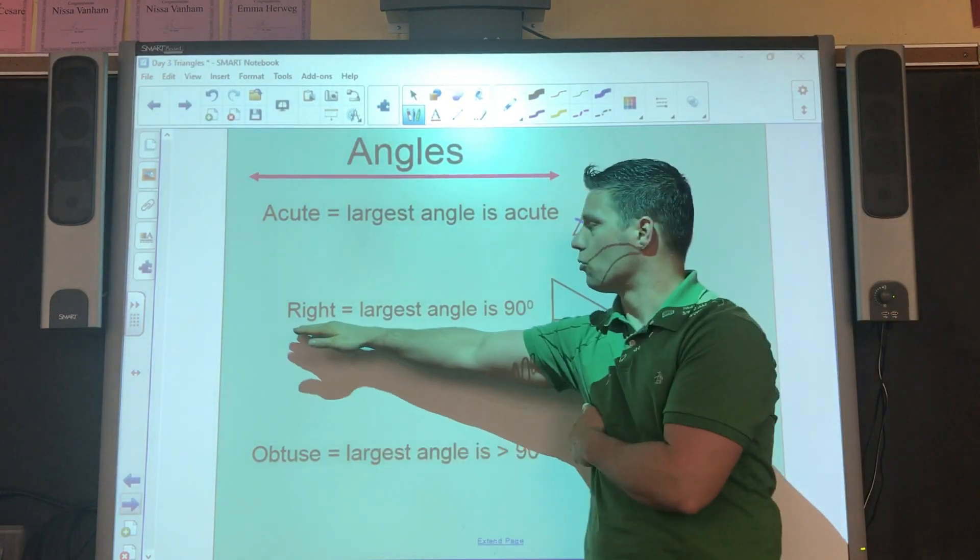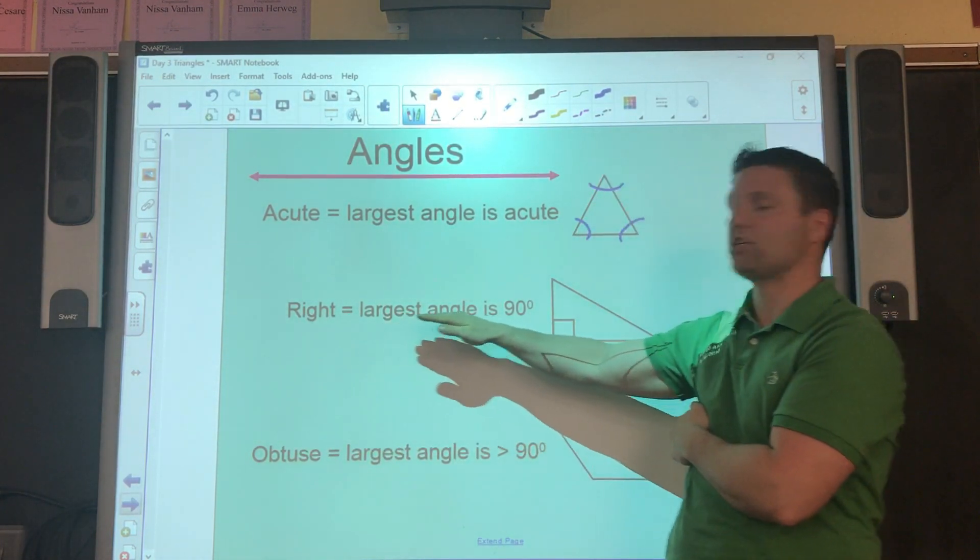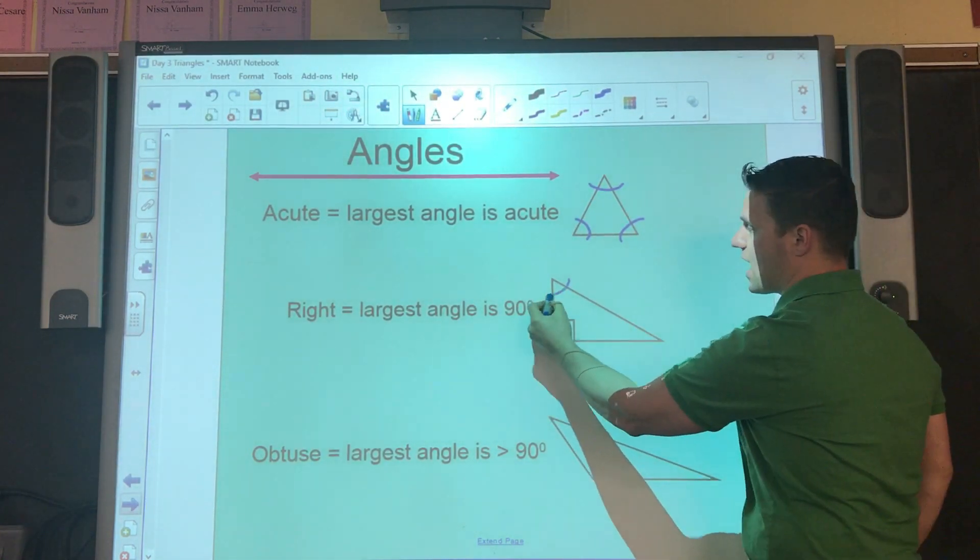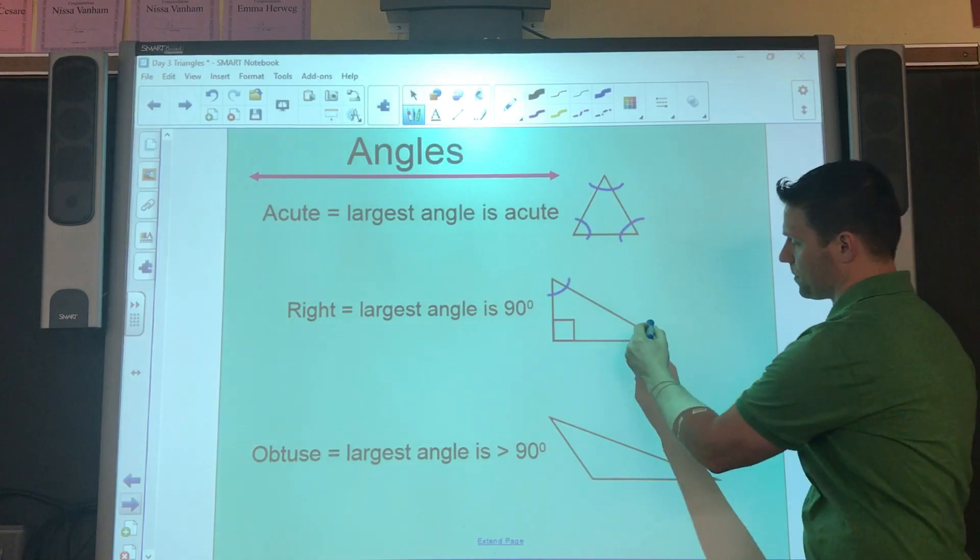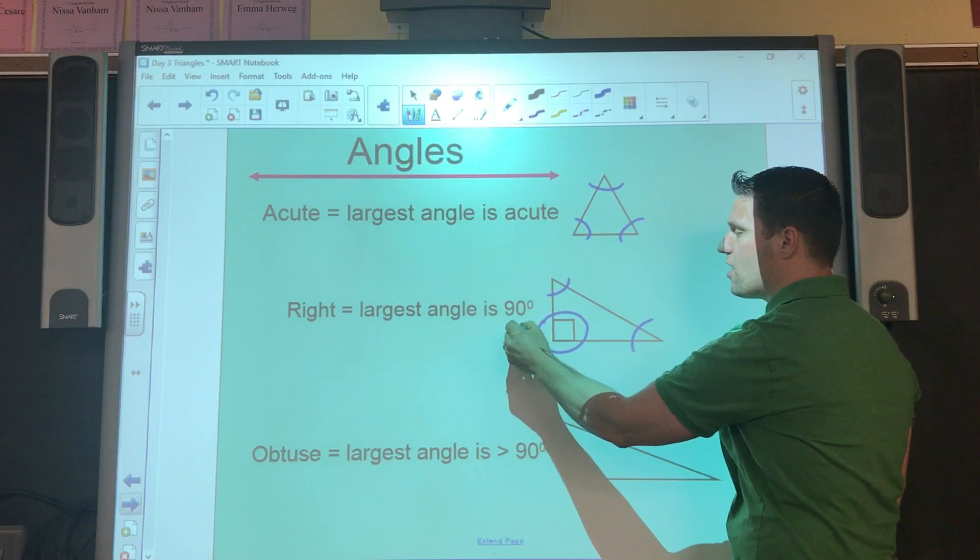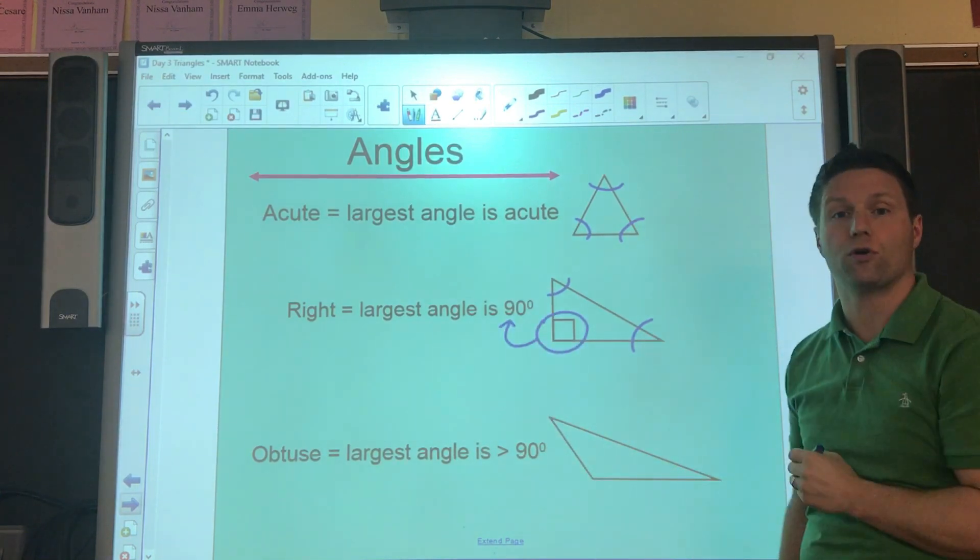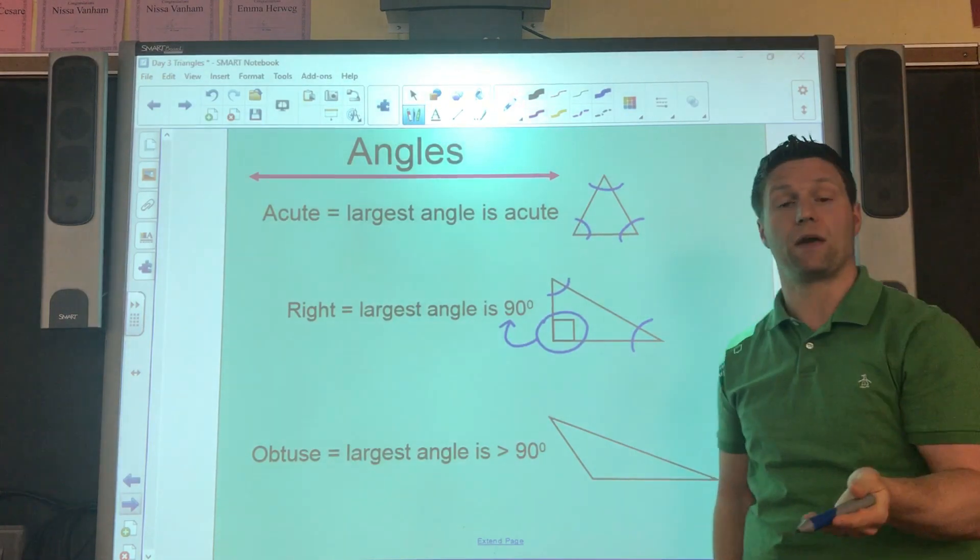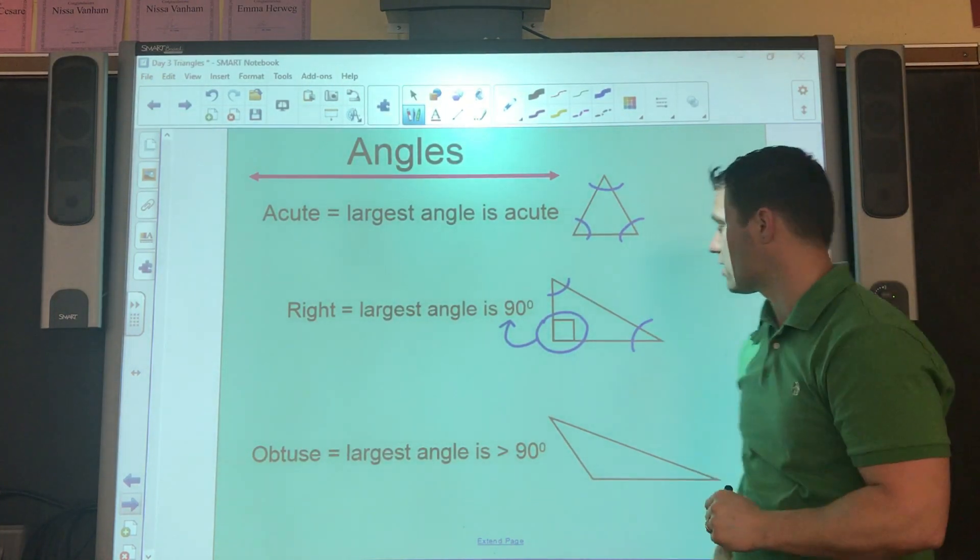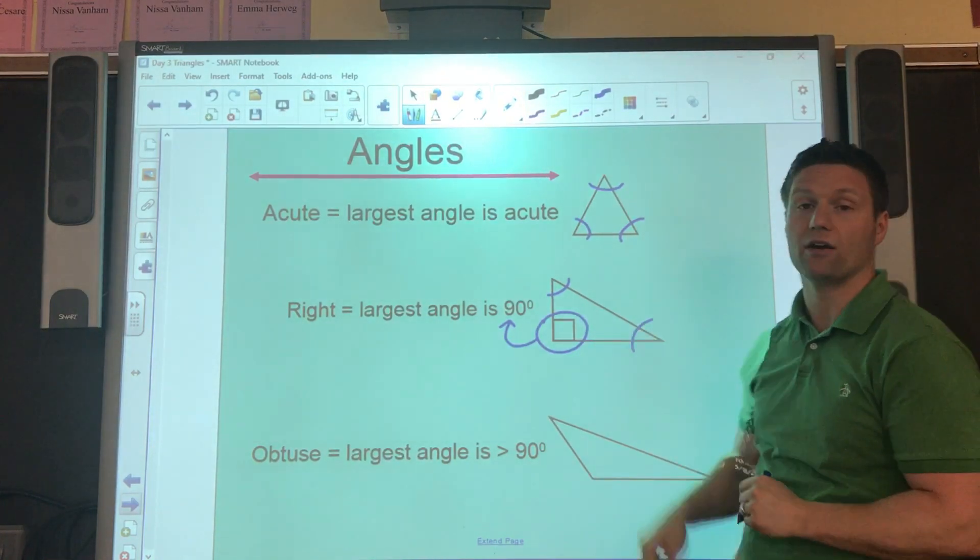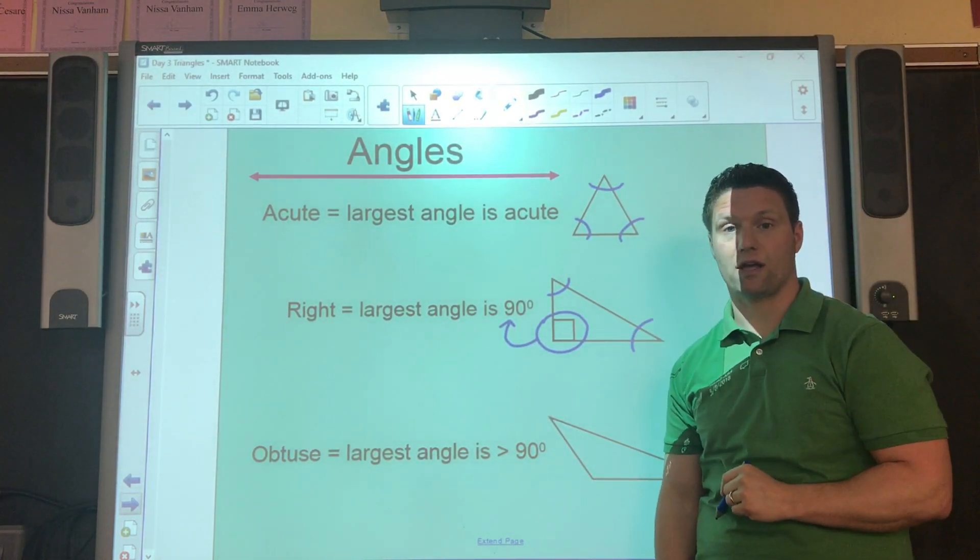Well, what about this one? A right triangle, when the largest angle is 90 degrees. Well, again, I'm going to start here. That is an acute angle, that is an acute angle, but this box here in the corner, that represents a perfect corner, just like the page, you know, in your book, page on the homework, the page from the note sheet that you're using. That means 90 degrees. So, therefore, this triangle would be a right triangle.